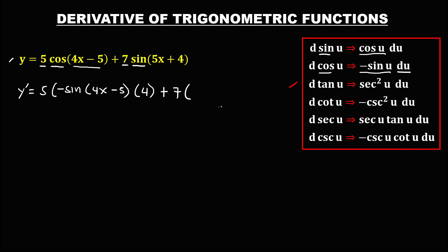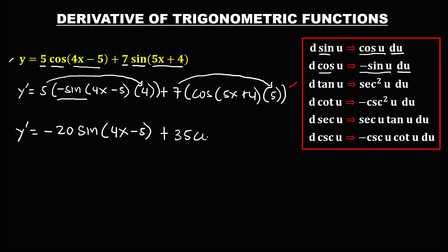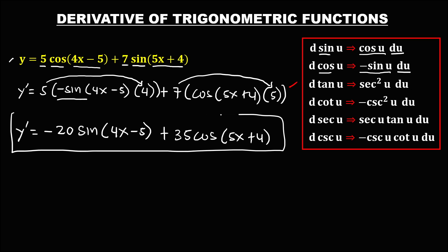Since the derivative of sine is positive cosine, this is cosine of 5x plus 4, times the derivative of u, which is the derivative of 5x plus 4. So this is 5. To simplify: 5 times 4 is 20, and this is negative, so we have negative 20 sine of 4x minus 5. Then multiply 7 and 5 to get 35, so plus 35 cosine of 5x plus 4. This is now the derivative.